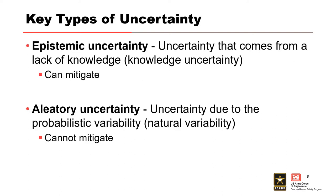Key types of uncertainty. I think of these as knowledge uncertainty versus natural variability. Knowledge uncertainty is something we could reduce — the answer exists, we just need to put in the effort, time, and money to find it. No uncertainty can be completely eliminated, but with knowledge uncertainty we can usually do better if we have the resources. Natural variability refers to things we really can't do anything about — precipitation being the main example. We can't predict the weather, and those are the two key types we're going to think about.